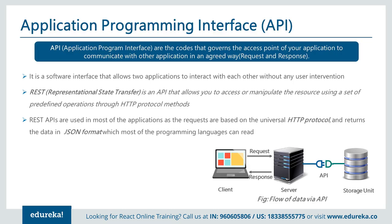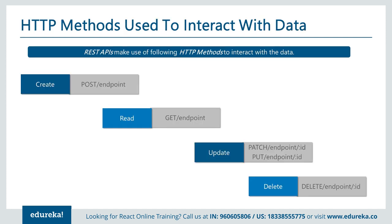What is an API? An application programming interface is code that governs the access point of an application to communicate with other applications in an agreed way. It's a software interface that allows two applications to interact with each other without any user intervention. REST — Representational State Transfer — is an API that allows you to access or manipulate resources using a set of predefined operations through HTTP protocol methods. Most applications use HTTP and return data in JSON format.